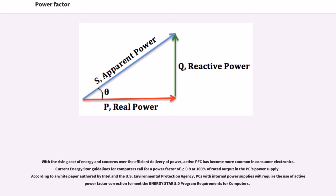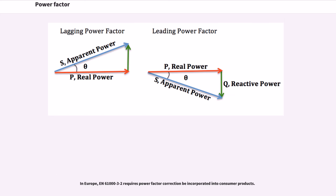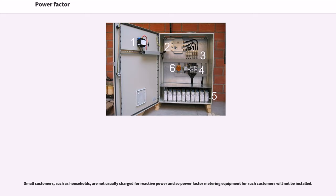With the rising cost of energy and concerns over the efficient delivery of power, active PFC has become more common in consumer electronics. Current Energy Star guidelines for computers call for a power factor of greater than or equal to 0.9 at 100% of rated output in the PC's power supply. According to a white paper authored by Intel and the U.S. Environmental Protection Agency, PCs with internal power supplies will require active power factor correction to meet Energy Star 5.0 program requirements. In Europe, EN 61003-2 requires power factor correction be incorporated into consumer products. Small customers, such as households, are not usually charged for reactive power, and so power factor metering equipment for such customers will not be installed.